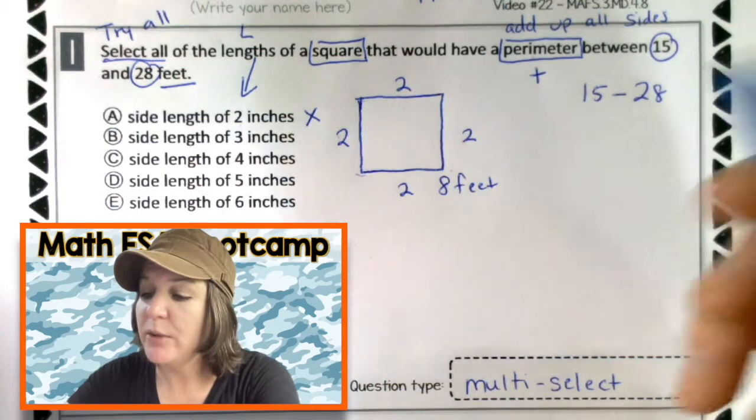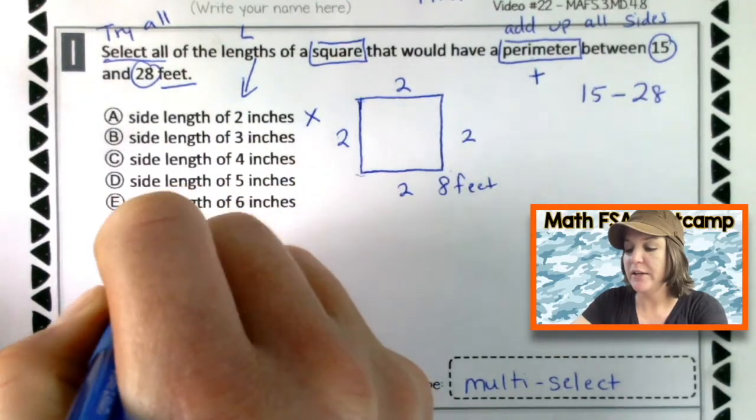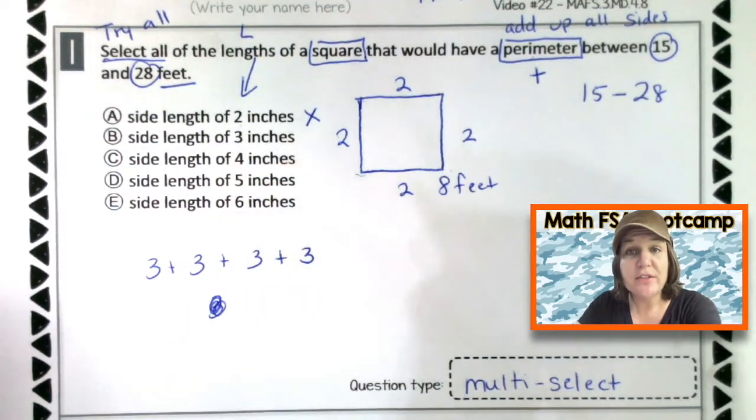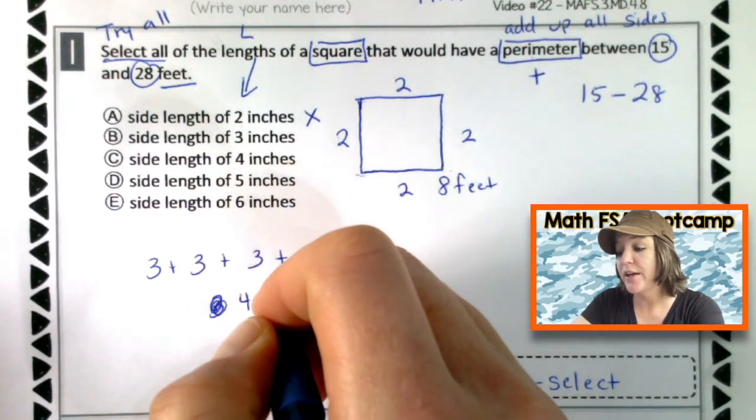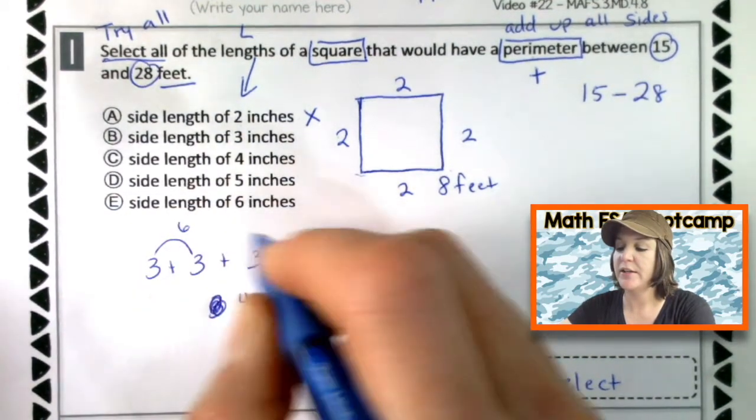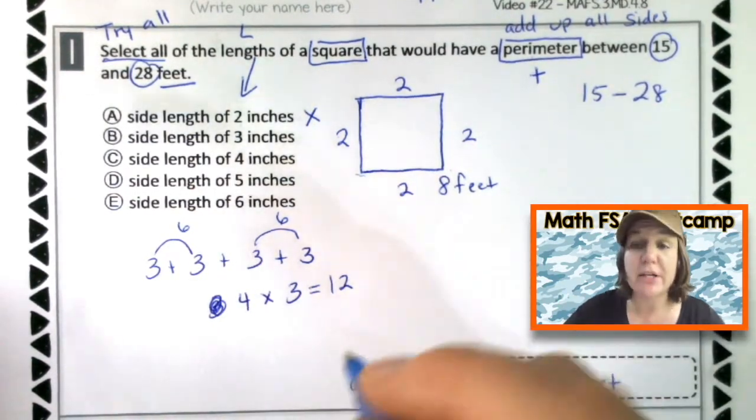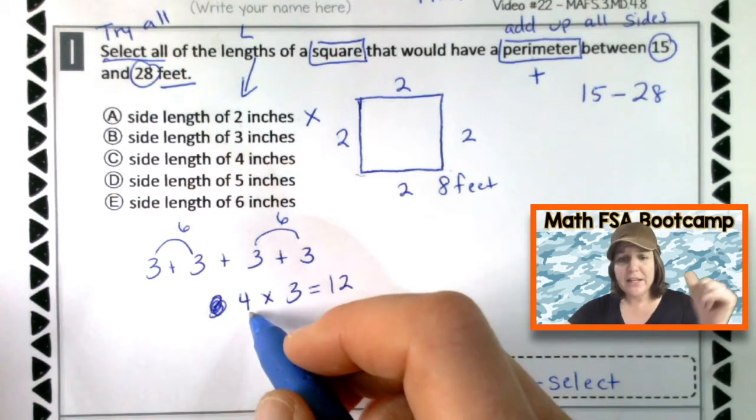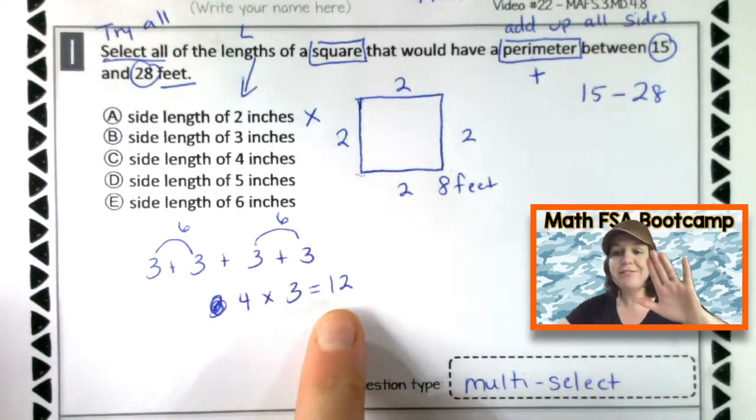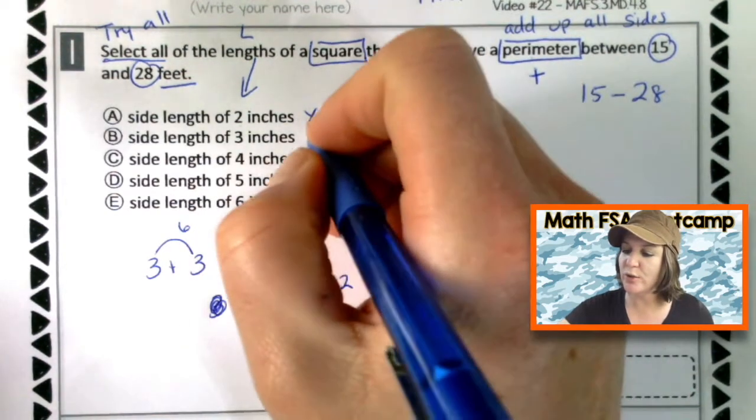Let's check out B. B would be three. So, if we popped three right here, that would be three plus three plus three plus three, which is also the same thing as four groups of three or four side lengths of three, which would be six and six. And if we add those together, that equals twelve. I could also use the multiplication mashup there counting by fours. Four, eight, twelve. There we go. Now, is 12 feet between 15 and 28 feet? It's not, right? It is too small. So, we're going to mark that one wrong-o.